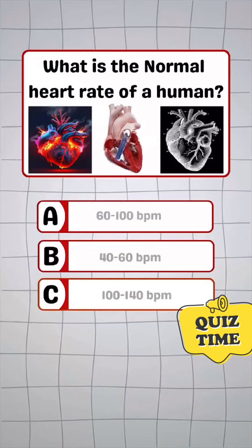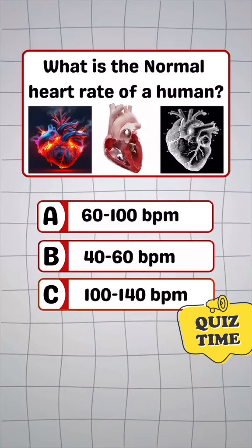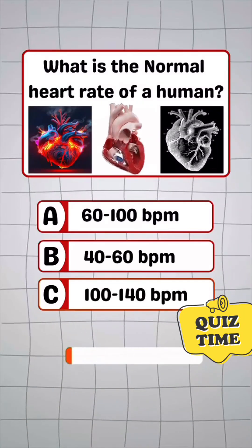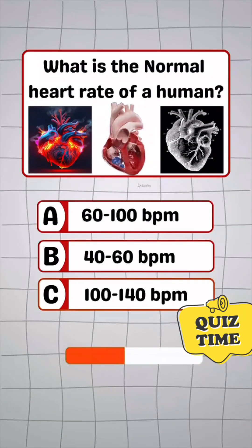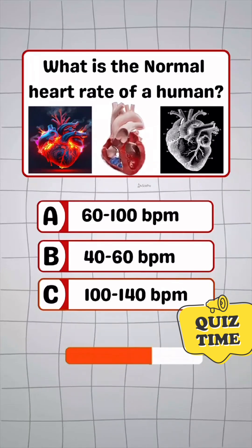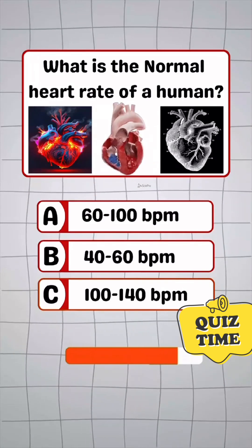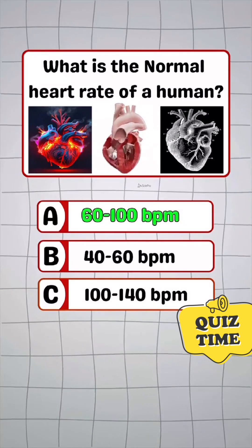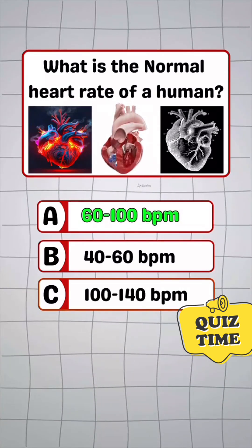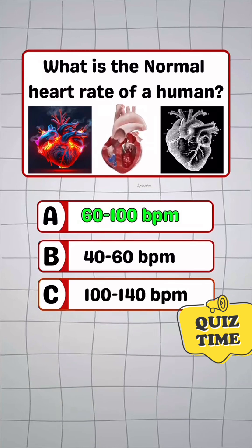Question 2. What is the normal heart rate of a human? Answer A: 60 to 100 beats per minute.